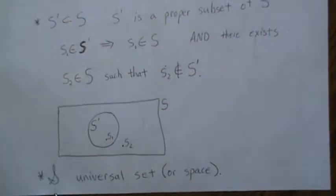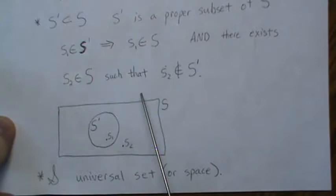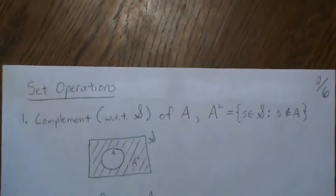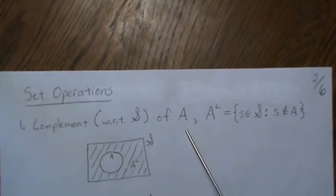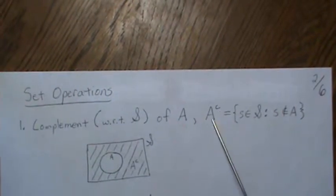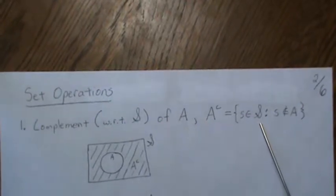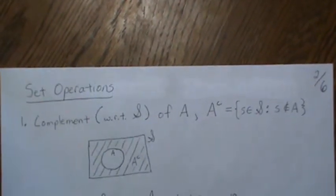Throughout this mini-series, the script S is going to be our universal set or space — we'll call it a space, like our sample space. Now, the set operations: complement just means everything that's not in A. So if we have A complement, that's all the elements of our sample space, our universal space, such that it's not in A. With a Venn diagram, it's everything but A.